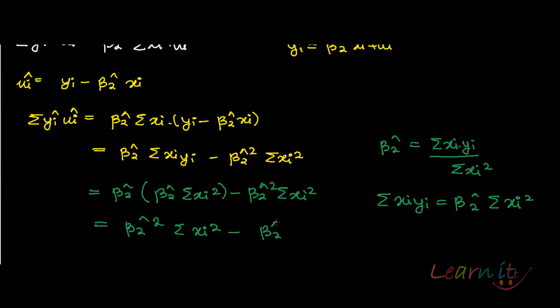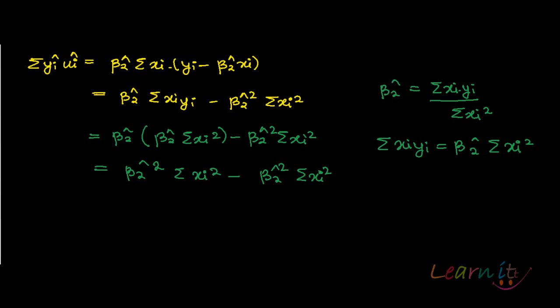Both of them will cancel out and this will fetch you zero. This becomes summation yi hat into ui hat equals zero, and this is what you wanted to prove.